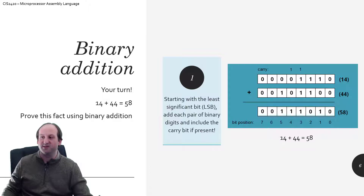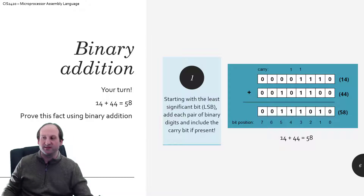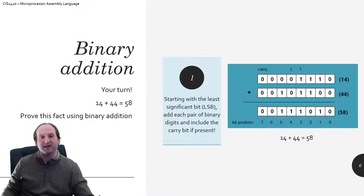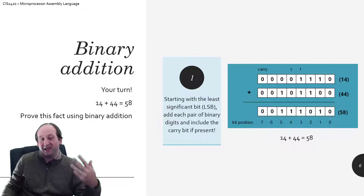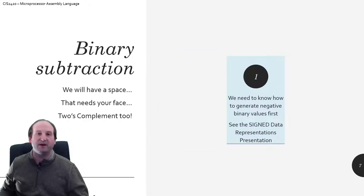Working through 14 plus 44 on a bitwise basis: bit 0, 0 plus 0 is 0; bit 1, 1 plus 0 is 1; bit 2, 1 plus 1 is 10 — write 0, carry 1; bit 3, 1 plus 1 plus 1 is 3 (binary 11) — write 1, carry 1; then 1 plus 0 plus 0 is 1; 0 plus 1 is 1; and 0 the rest of the way. Converting that result back to decimal gives us 58 — the correct answer.